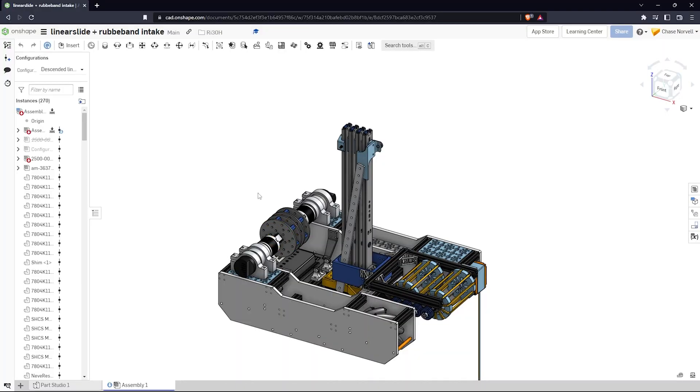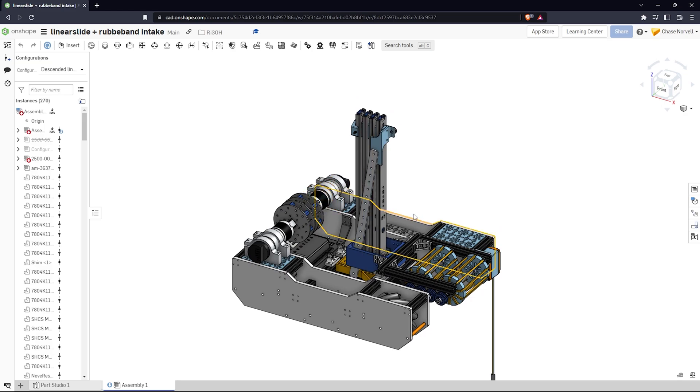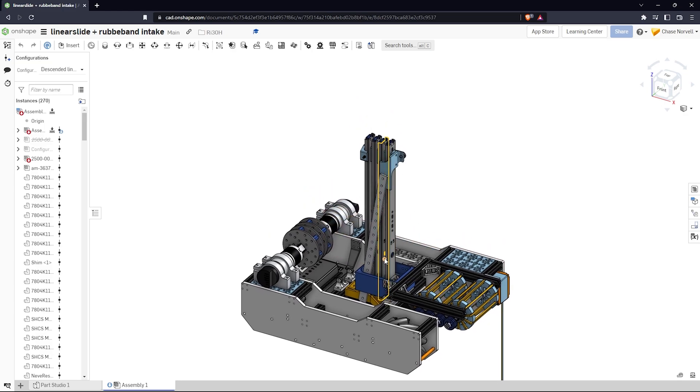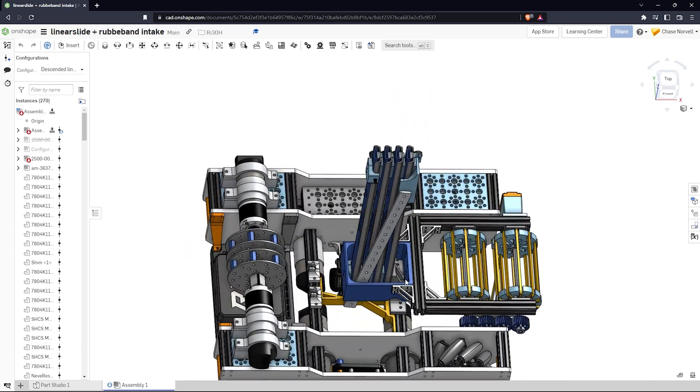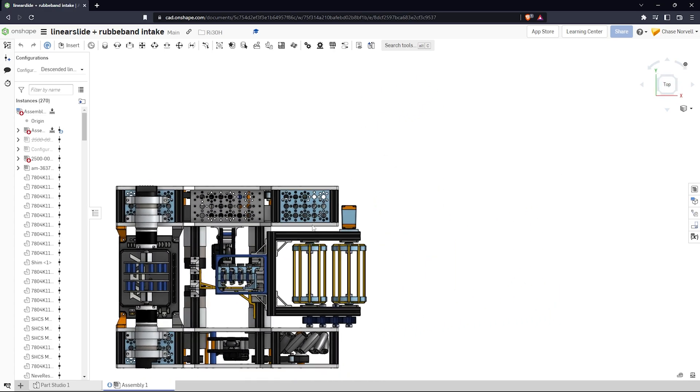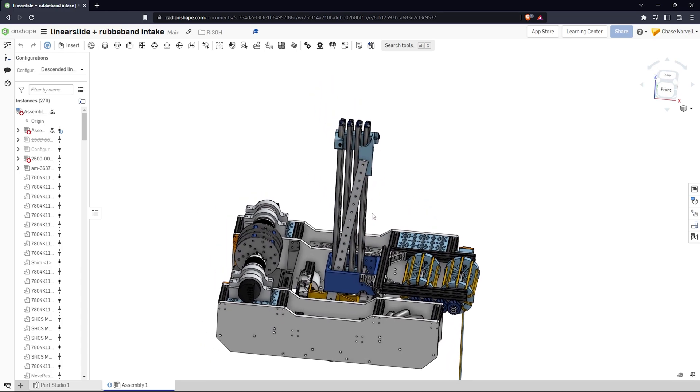That's it for the robot overview. We will be listing a good explanation on how cascading linear slides work in the description, so if you want more information on that go ahead and check down there. We will be posting more videos on updates along with tutorials and FTC tips and tricks. Thank you again for watching.